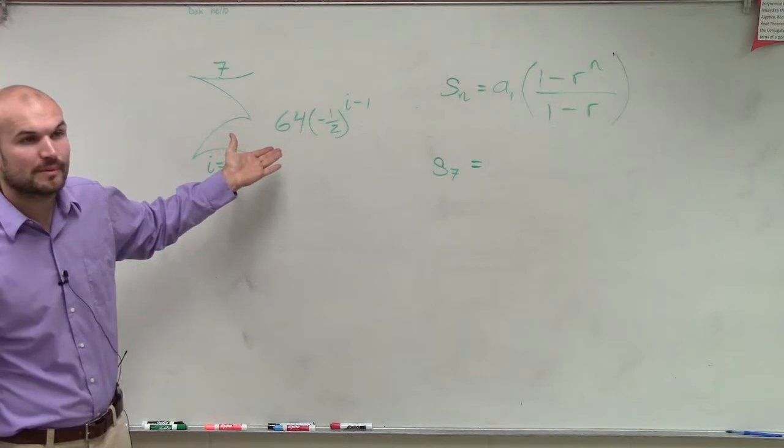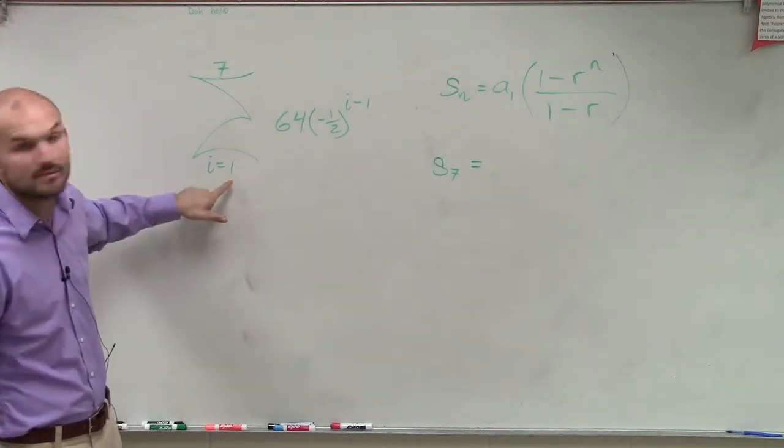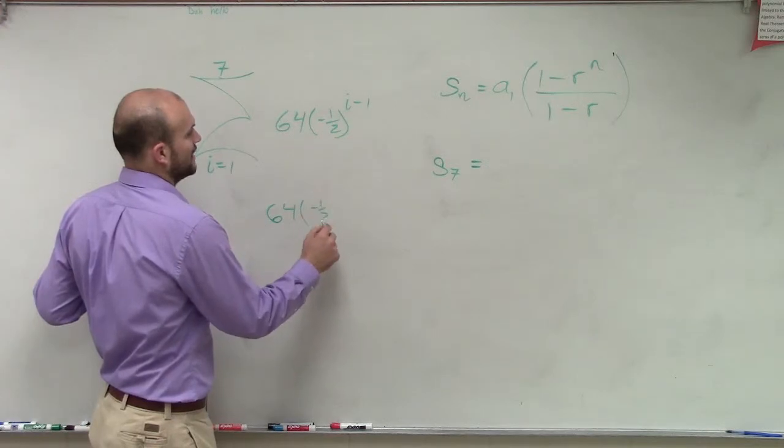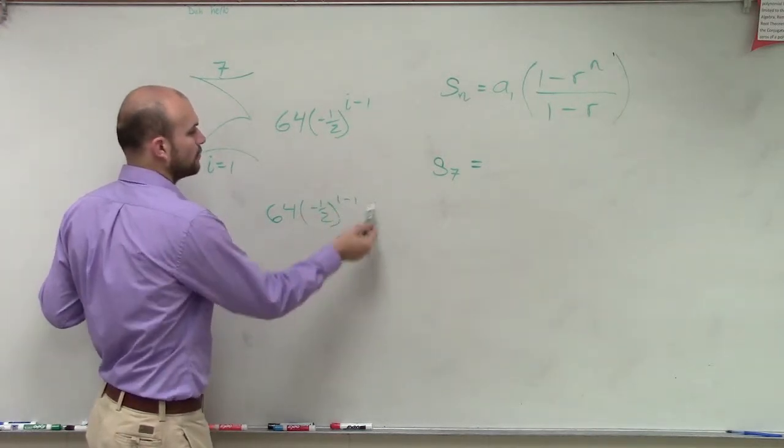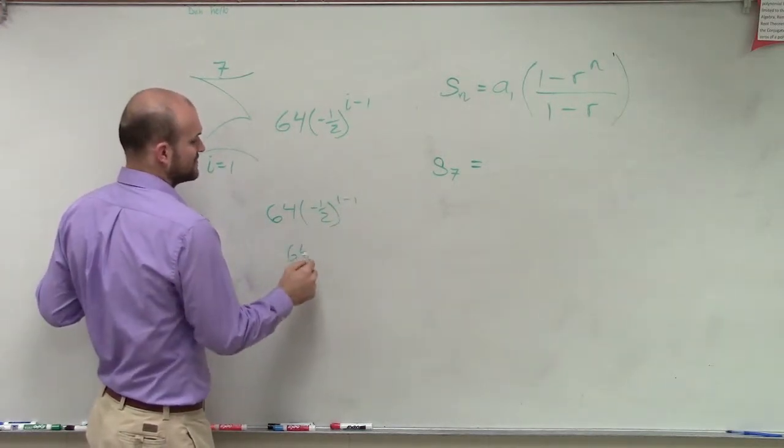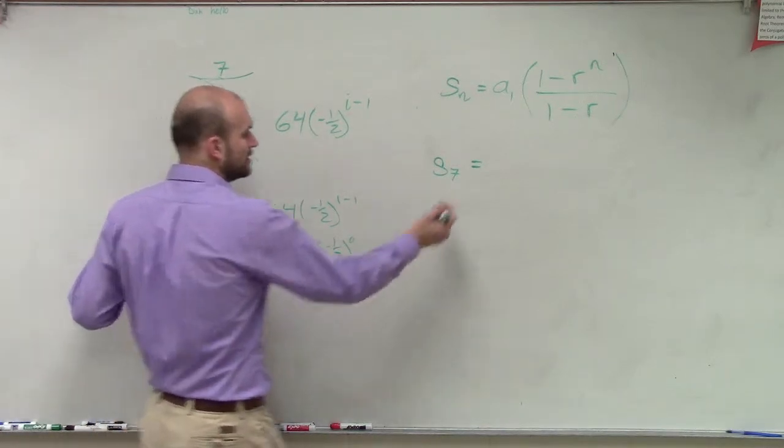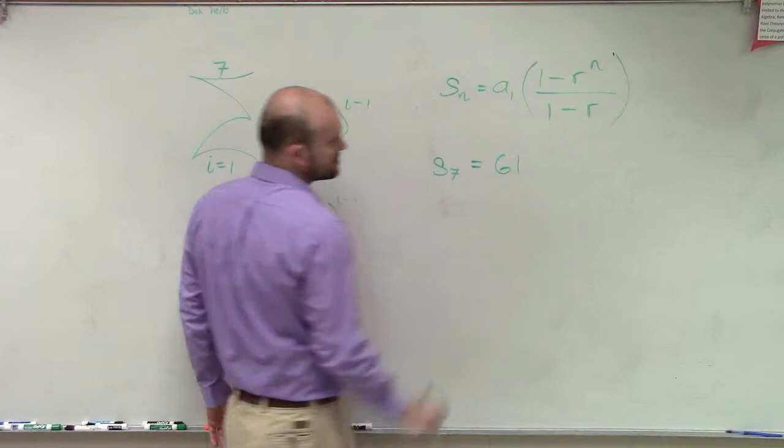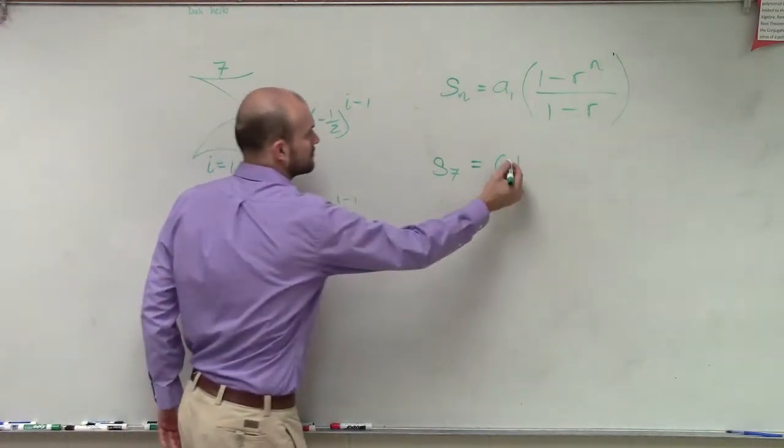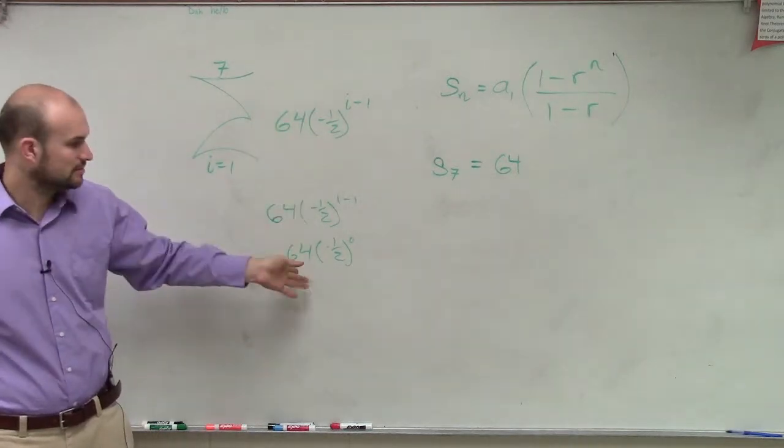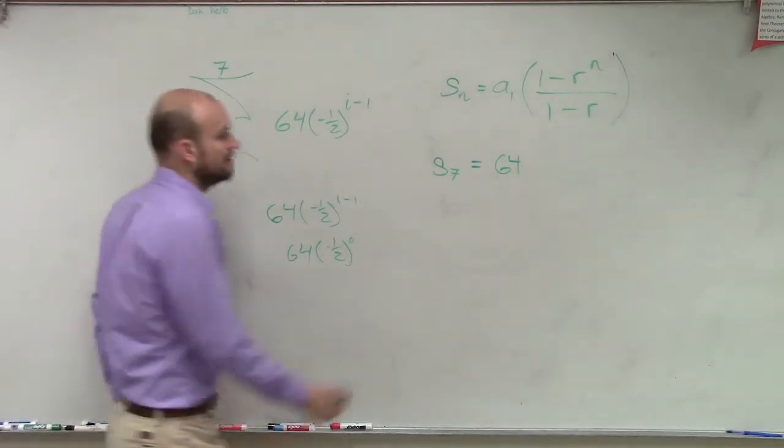So we have s of 7 equals our first term. So let's determine what happens when we plug in our first term. Our first term is i equals 1, right? So you could say 64 times negative 1 half times 1 minus 1. Well, 1 minus 1 is 0. So you'd have 64 times negative 1 half raised to the 0. That equals 1. So you could say a sub 1 is just 64, because when you put a 1 in for i, that ends up giving you just 64.